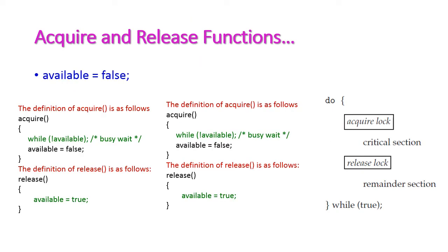Now let us see how mutex locks work for two processes — Process 1 and Process 2. Initially the available value is true since it is a common variable for all processes. When Process 1 wants to execute the critical region, it executes the acquire function. The initial value of available is true, so 'not available' is false, and the control comes out of the while loop. Process 1 then sets available to false and enters the critical section, locking entry for other processes.